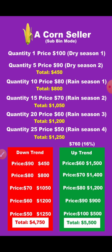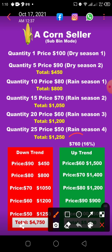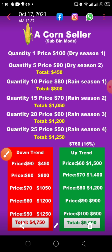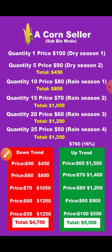The price continues to appreciate to $120. Quantity 1 can be sold at $120 — he bought it at $100, making $20 profit. If you accumulate everything, the total percentage profit is 16% and the total profit in dollars is $760. This is how the sub-B mode works: as the price appreciates in the uptrend, the bot sells what it has bought one by one because the price is appreciating.